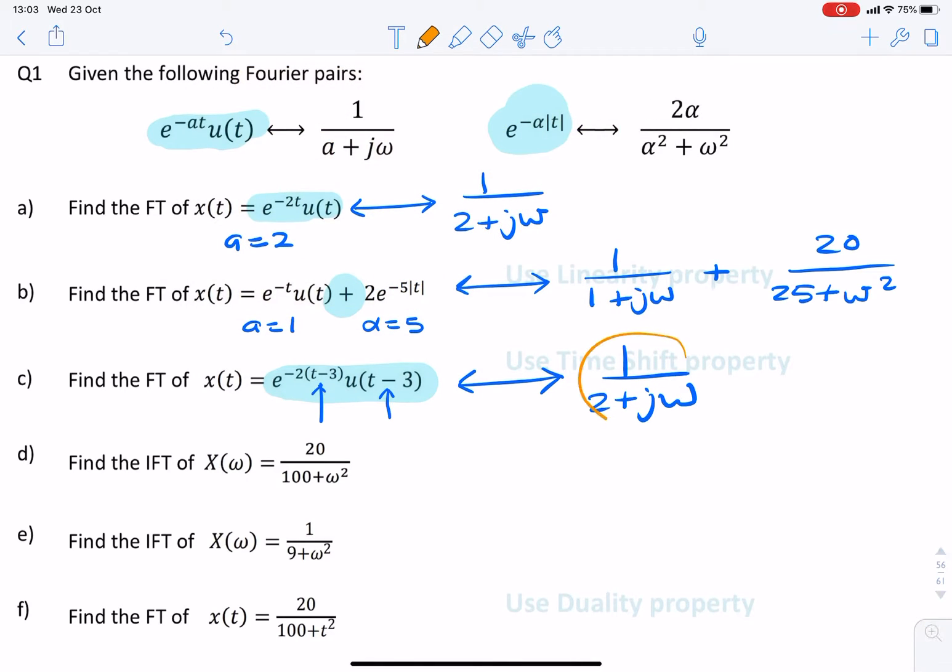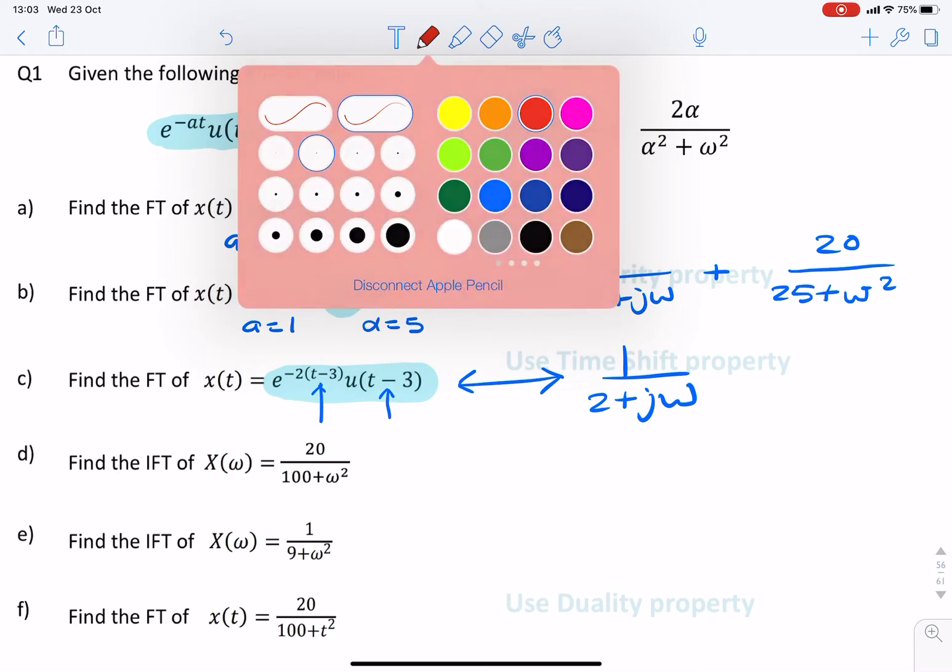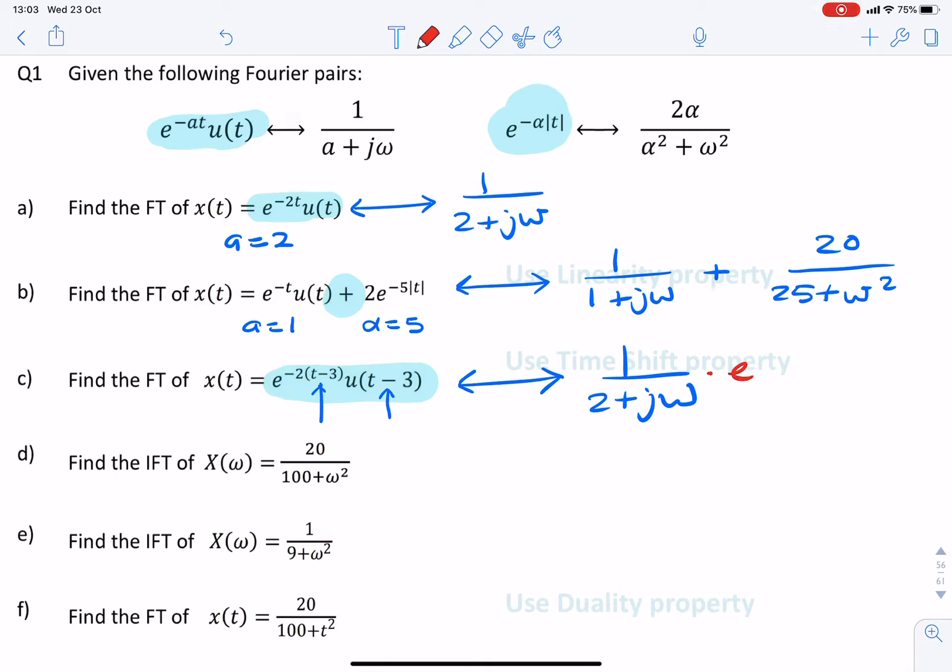So this is the same as that, no change, except we need to multiply by e to the minus j omega 3. So this is the time shift property.